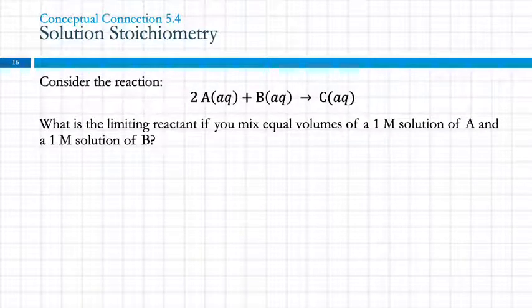This is a conceptual one. Consider this reaction. And this is like generic, right? So we've got A's, B's, and C's instead of specific compounds because the actual compounds don't matter. What's the limiting reactant if you mix equal volumes of a one molar solution of A and a one molar solution of B? A is the limiting reactant.